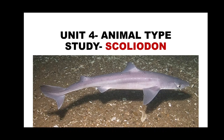Hello and welcome. Today we will discuss Unit 4, which is animal type study. In this semester we have Scoliodon to study. Scoliodon is a fish, and all fishes come under the chordate group. In the previous semester we studied different phylums related to the non-chordate group. In this semester we will discuss the different phylums which come under Chordata and their representative examples, including the classification of different chordate groups.